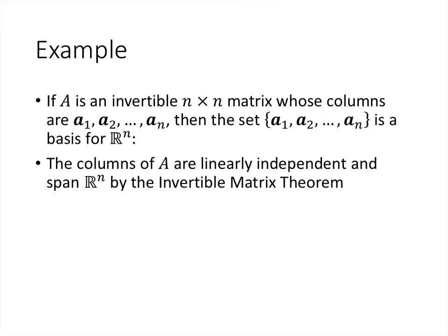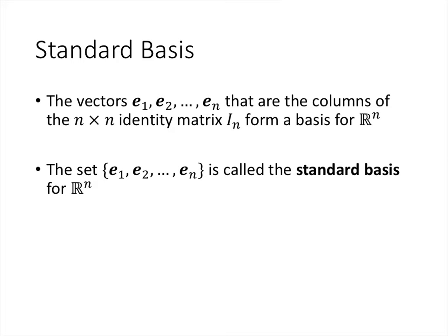Some examples of bases: if we have an invertible n×n matrix with columns a₁, a₂, …, aₙ, then those columns form a basis for Rⁿ. The columns are linearly independent and they span Rⁿ — we know this from the Invertible Matrix Theorem. We also have the standard basis for Rⁿ, which consists of the columns of the n×n identity matrix.